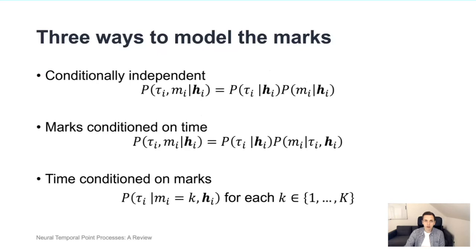Next, let's see how it's actually done when we are dealing with marks in the sequence. Of course, one very simple idea is to assume that the inter-event times and the marks are conditionally independent. And then, if we have categorical marks, we simply have to parameterize another categorical distribution for the marks given the history embedding hi. A more flexible approach is to instead either condition the marks on the time, which means that we have to define a separate mark distribution for each time in the future, or alternatively define the time conditioned on the marks, which means that we model a separate inter-event time distribution for each of the capital K different marks.